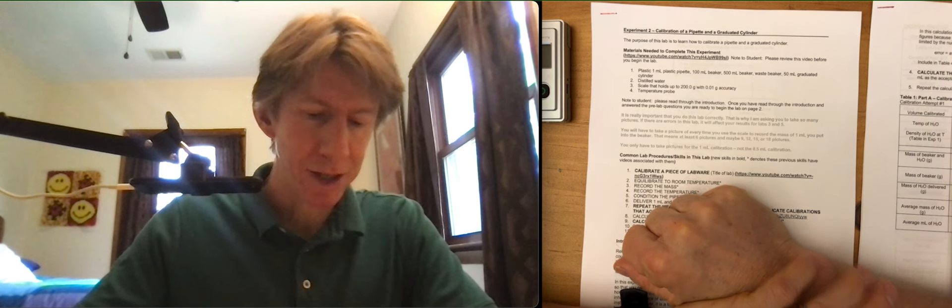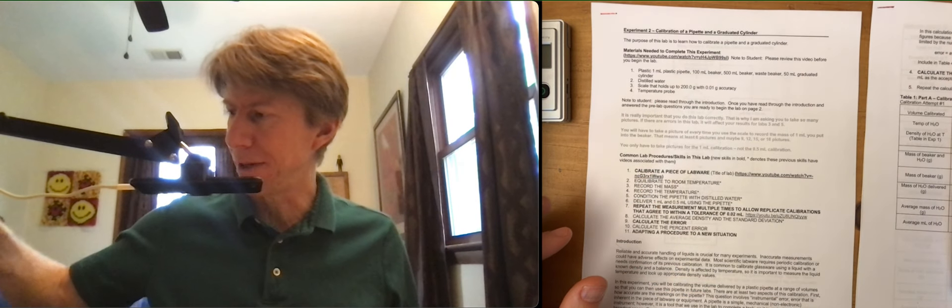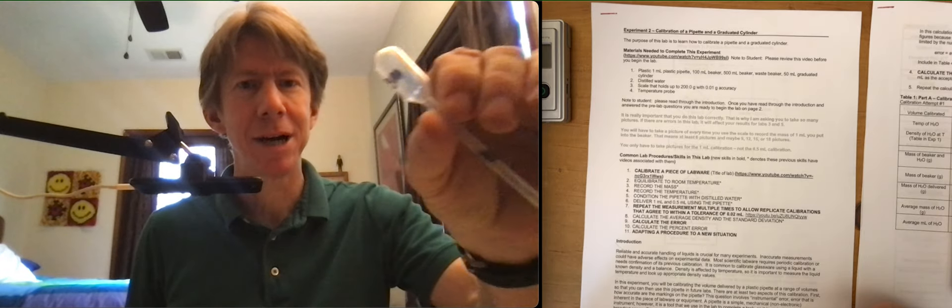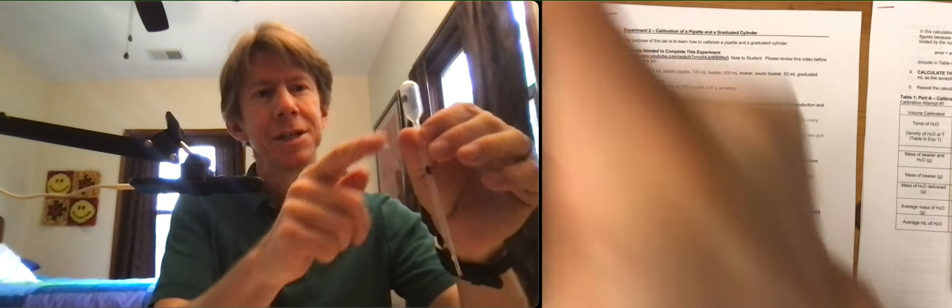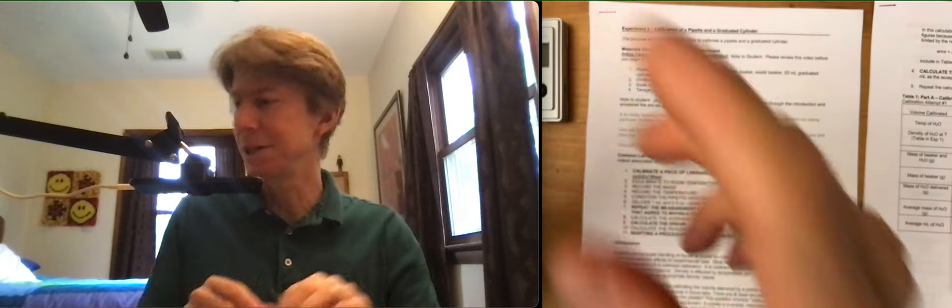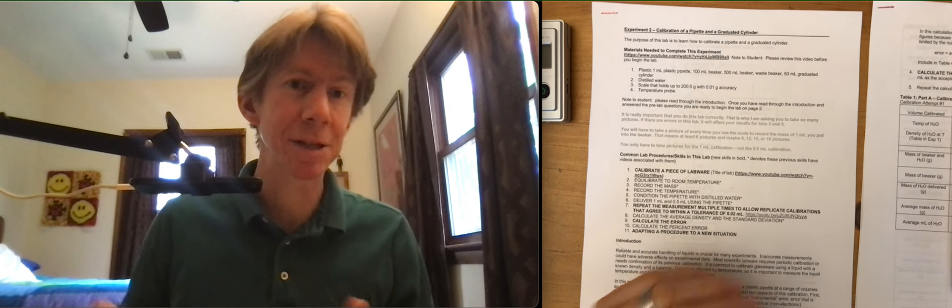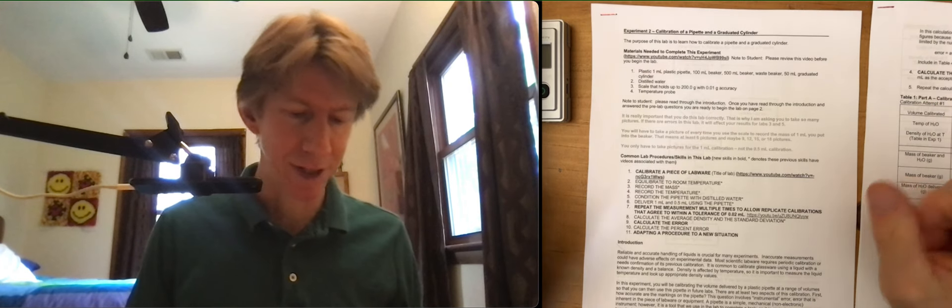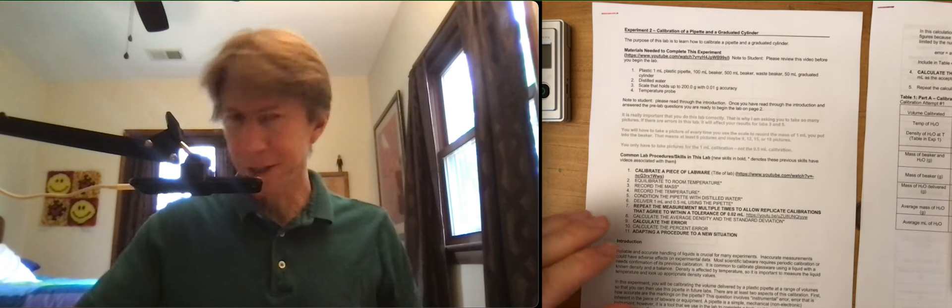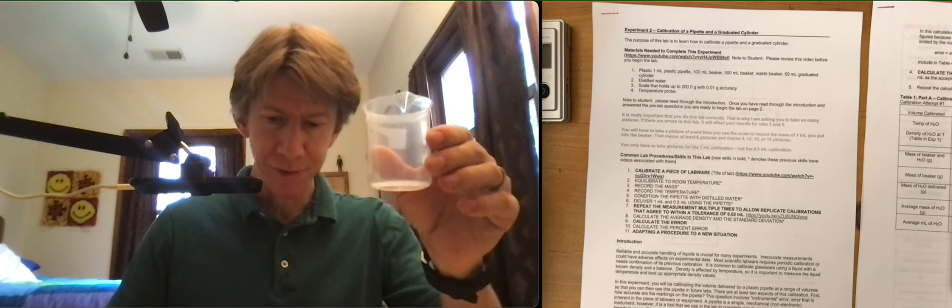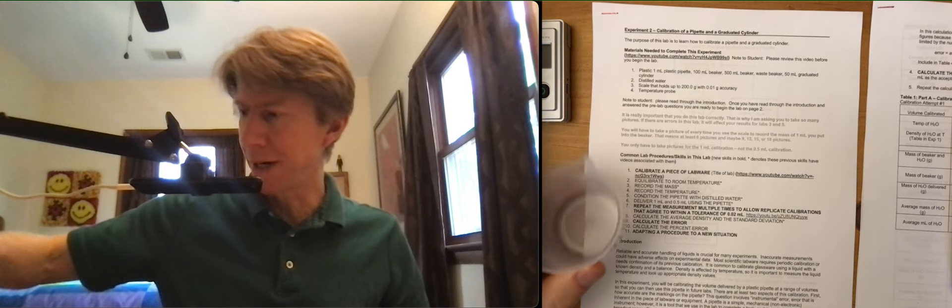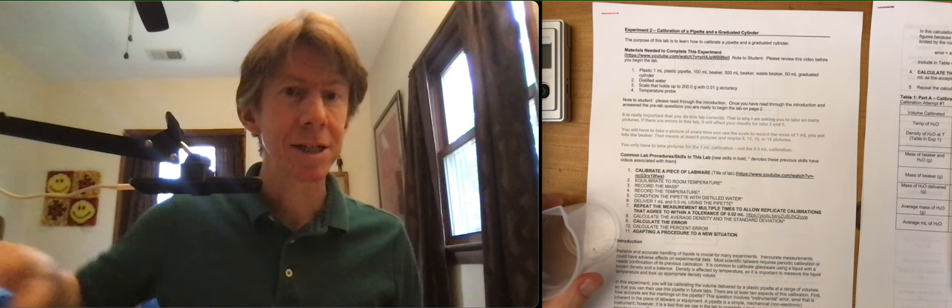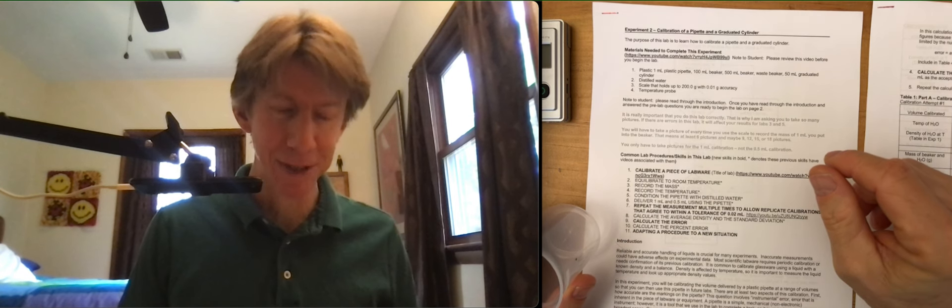The materials you need are a plastic 1 milliliter pipette, and I've got mine right here. I've prepped mine by labeling it with my initials both on the bulb and in the middle. As long as you've got some distinguishing marks on it so that you can tell it apart from the other ones, that's fine. You need a 100 milliliter beaker and a 500 milliliter beaker. My 500 milliliter beaker already has 400 milliliters of water because I've equilibrated it for 15 minutes already.